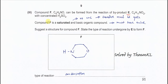Part three: compound F with molecular formula C₄H₉NO can be formed from the reaction of byproduct E with concentrated H₂SO₄. Concentrated H₂SO₄ can promote elimination or condensation depending on the context. From the formula comparison of E and F, it is clear that a condensation reaction occurs.